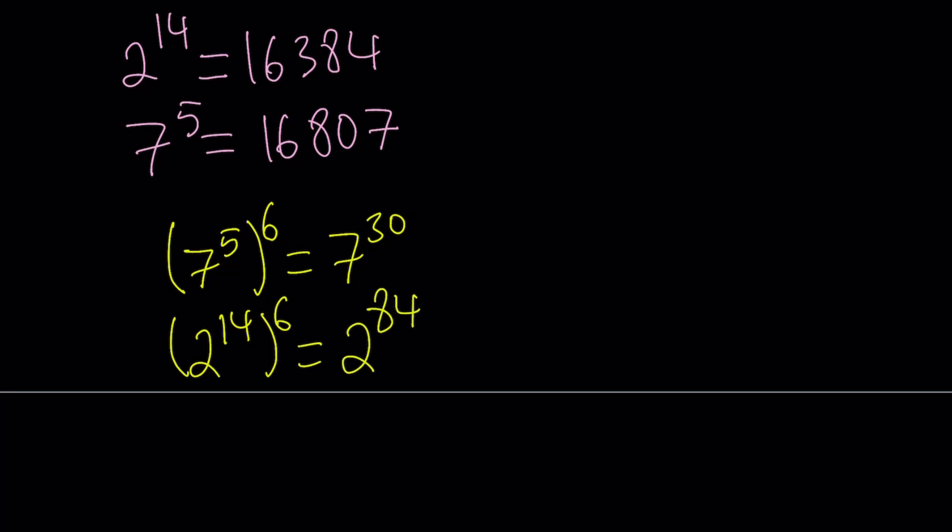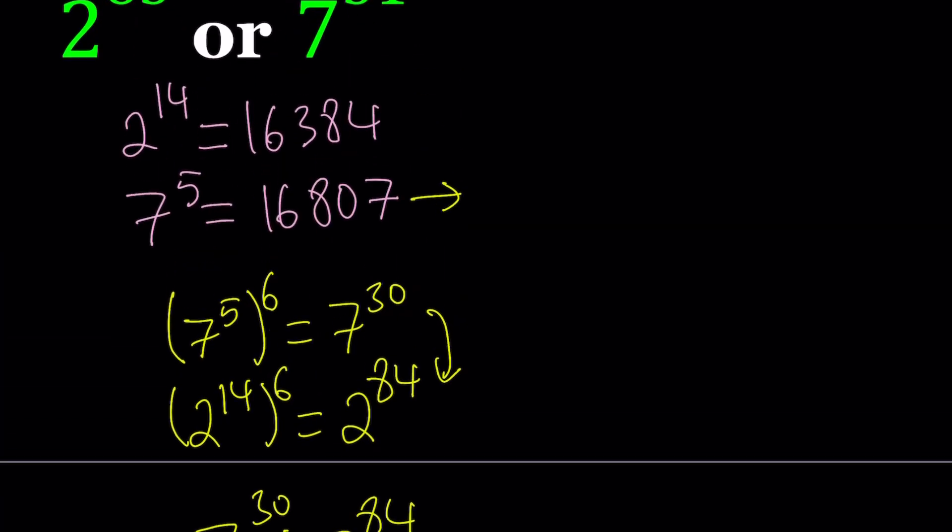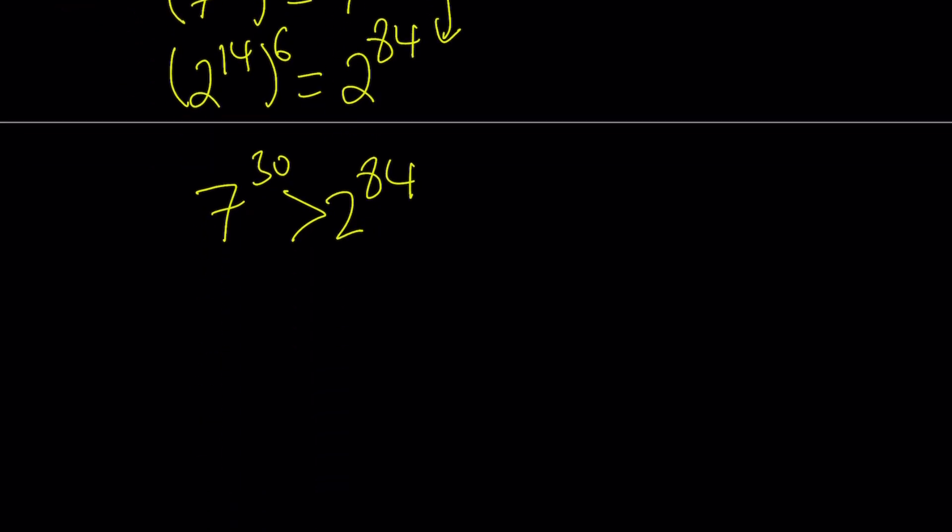Now, since we already know that 7 to the 5th power is greater than 2 to the 14th power, this implies that 7 to the power 30 is greater than 2 to the power 84. So this is basically what we're going to use as a starting point.